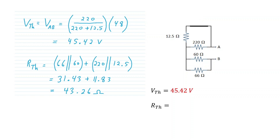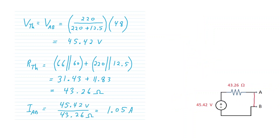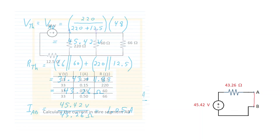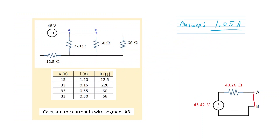For the Thevenin ohms, we short circuit the constant voltage source and consider what the equivalent resistance would be observed at points AB. We have two parallel combinations that are then in series, so by combining the parallel combinations and adding those results, we get 43.26 ohms — that's our Thevenin ohms. We bring in the Thevenin equivalent circuit, connect the output, and simply use Ohm's Law: V = IR. The current in segment AB is the Thevenin volts over the Thevenin ohms — indeed 1.05 amps, matching what we had from analyzing the solution table.